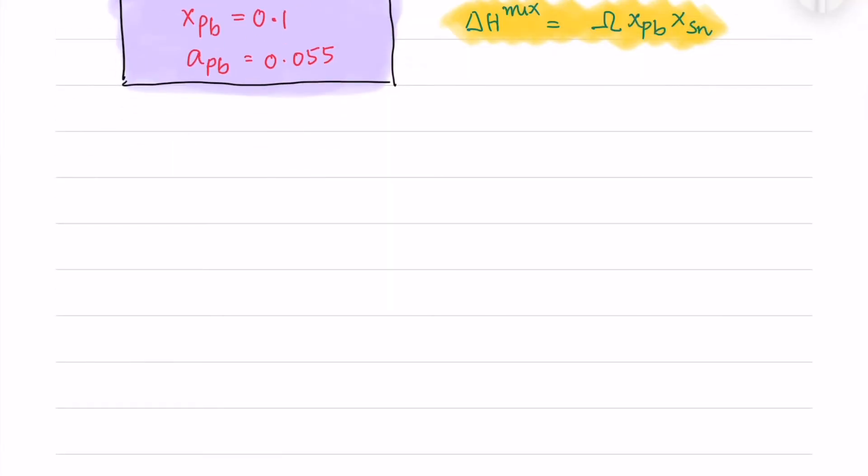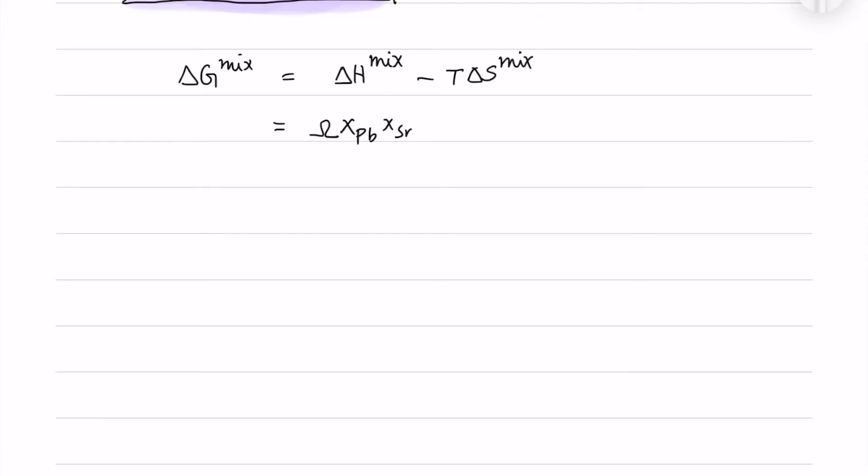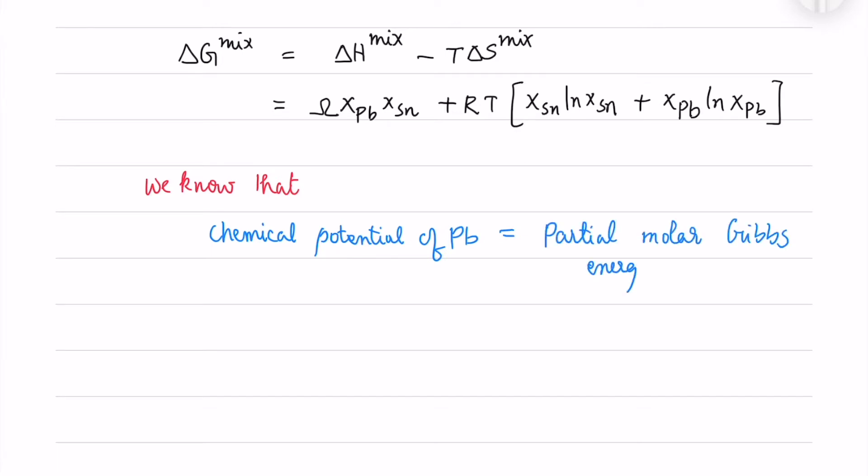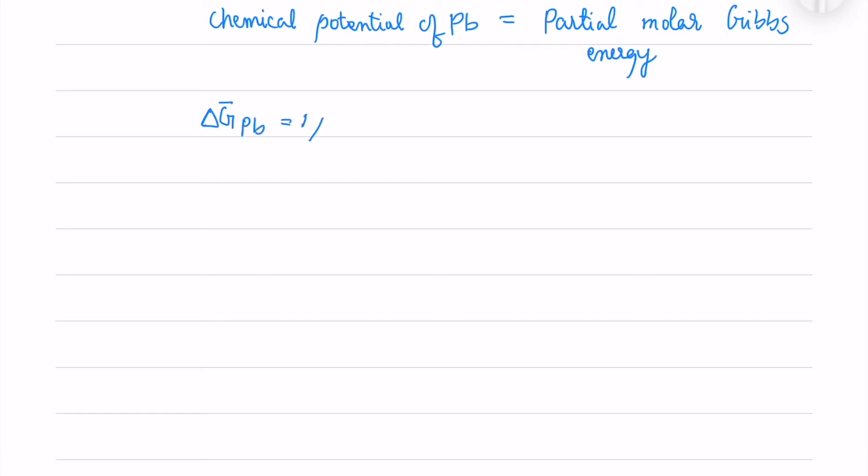Now we will write the delta H-mix equation and expand the individual terms. Also we know that the chemical potential of an element, let's say lead, equals the partial molar Gibbs free energy of that element. That is represented mathematically as RT ln a_Pb equals the chemical potential of Pb. So this is the relation between the chemical potential and the activity.